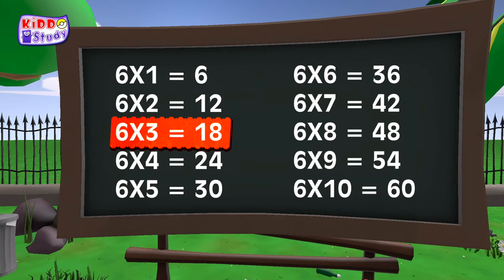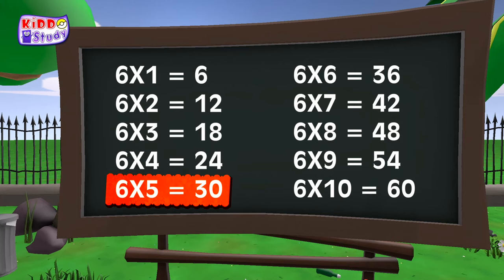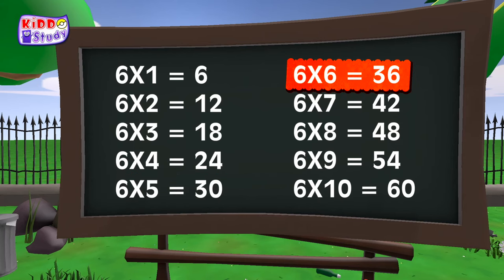Six threes are eighteen, six threes are eighteen. Six fours are twenty-four, six fives are thirty. Six fives are thirty, six sixes are thirty-six.